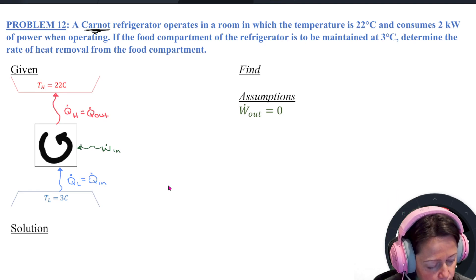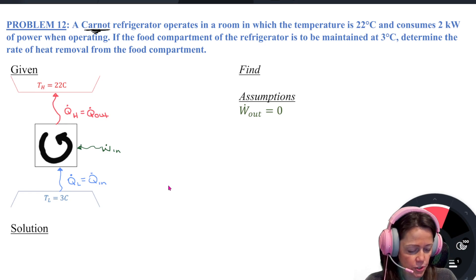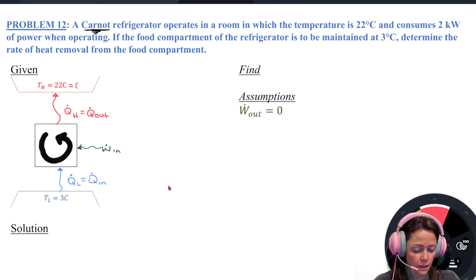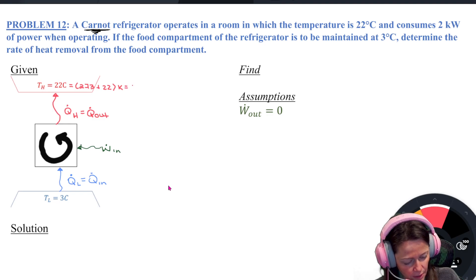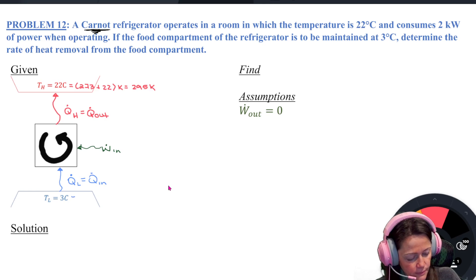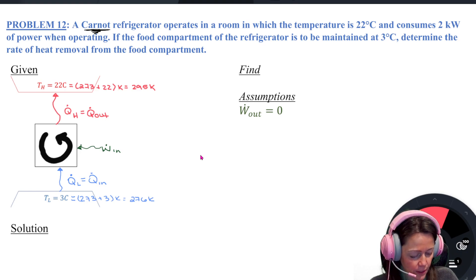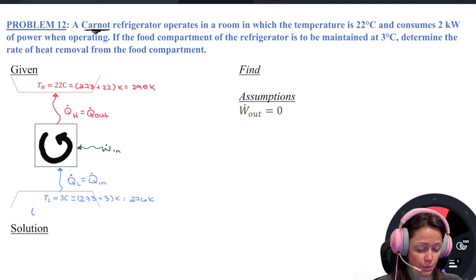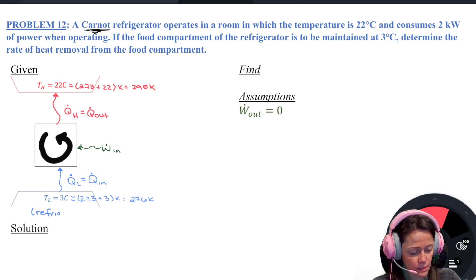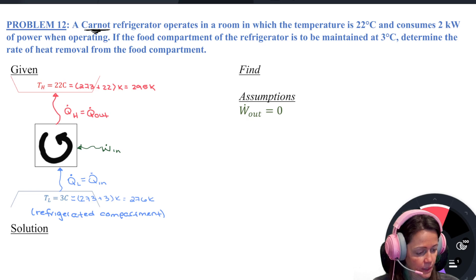The temperatures in Kelvin: 273 plus 22 is 295 Kelvin for the room, and 273 plus 3 is 276 Kelvin for the food compartment. Think about labeling those reservoirs — this is my refrigerated compartment and this is the kitchen or environment. We've got everything so far. The problem asks for the rate of heat removal from the food compartment, so I'm looking for Q dot L or Q dot in — also called my cooling or refrigeration capacity.